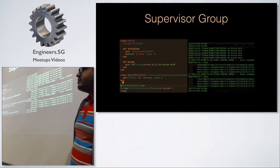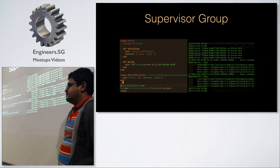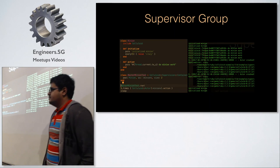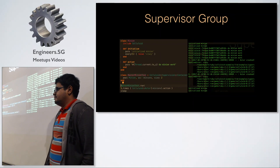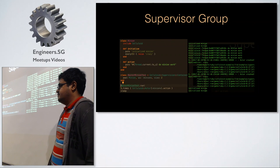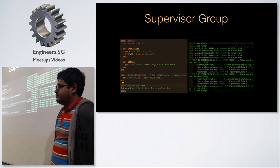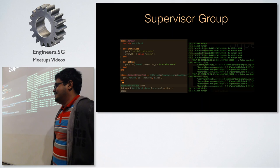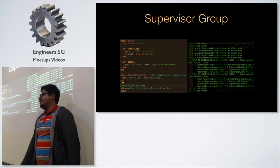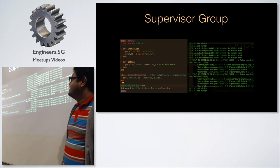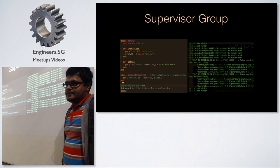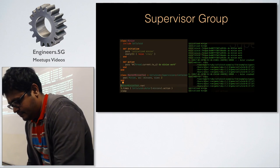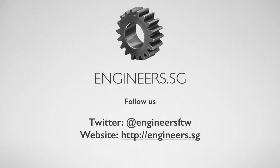An audience member notes that most of their parallelism problems are multi-machine — multiple machines trying to synchronize and avoid concurrent access to the same record across machines — using the database as the synchronized system. The presenter acknowledges this is a different use case. The session wraps up, inviting further questions for the speaker after the talk.